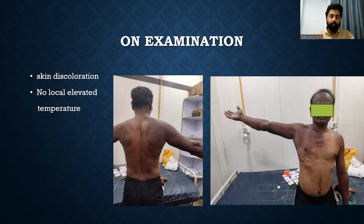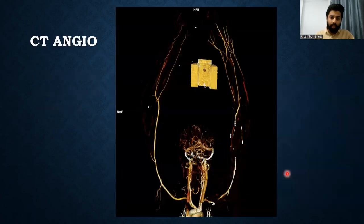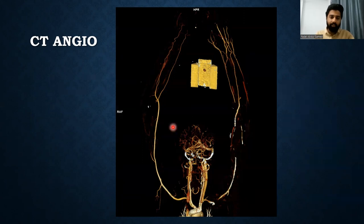As per the clinician's request, we performed a CT angiography. On arterial phase, we observed that the bilateral upper limb arterial system were normal. This is a 3D reconstruction image depicting the same.